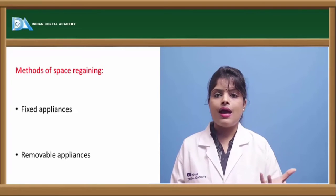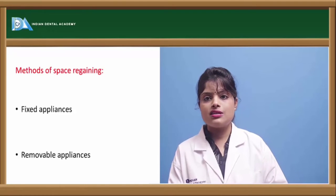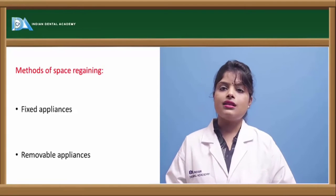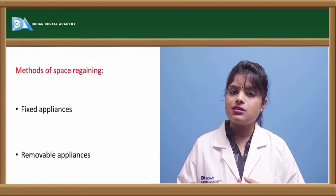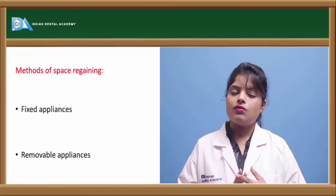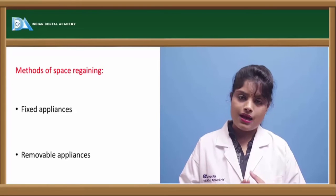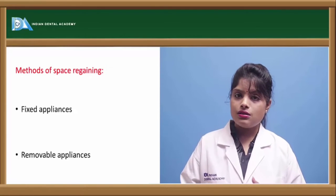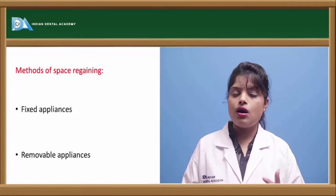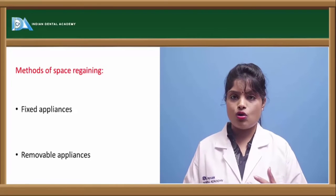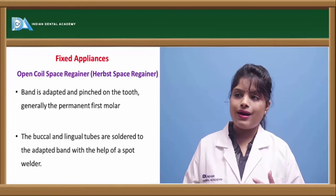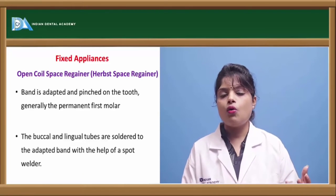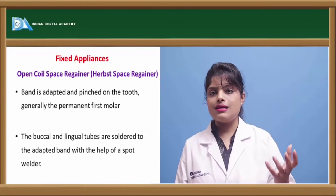There are various appliances used for space regaining procedures. They can be either fixed appliances or removable appliances. Under fixed appliances comes the Hyrax appliance or the open coil space regainer.